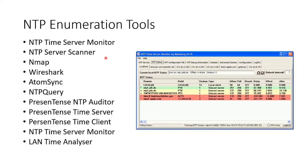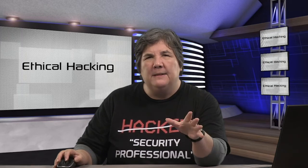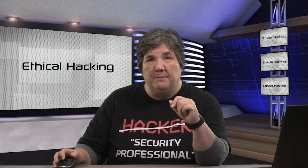There are a bunch of NTP enumeration tools. There's NTP server scanner, even Nmap, Wireshark, AtomSync, NTP query — a bunch of these will query NTP for us. So that's using Network Time Protocol for enumeration.